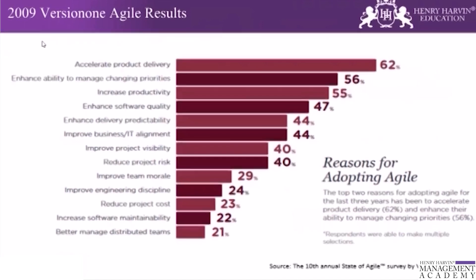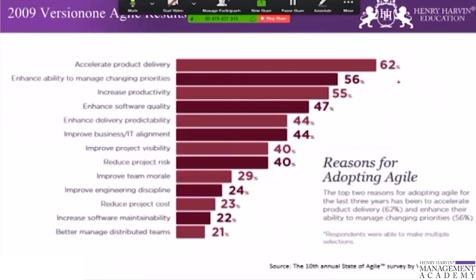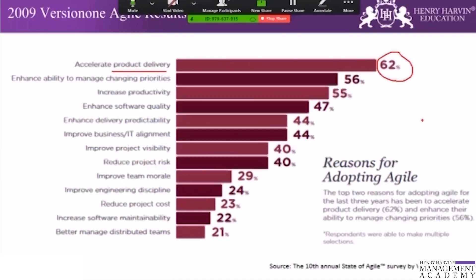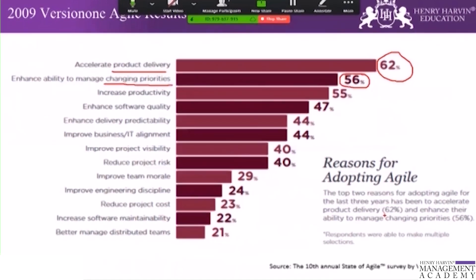Now let's cover the VersionOne agile results. These results are from 2009 when agile was becoming a buzzword in the industry. Product delivery was increased by 62 percent — a huge increase. It is believed only 33 percent of SDLC projects were delivered successfully without overshooting budget or schedule. Agile enhanced the ability to manage changing priorities by 56 percent.